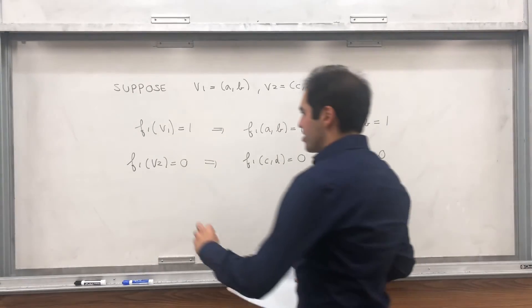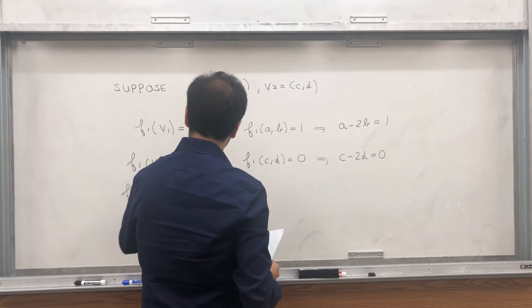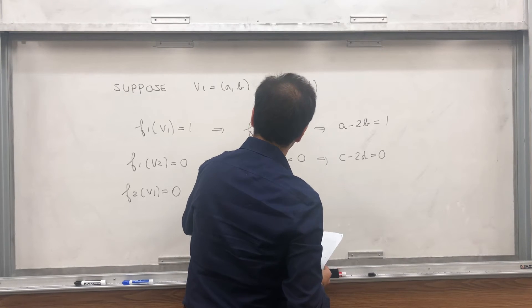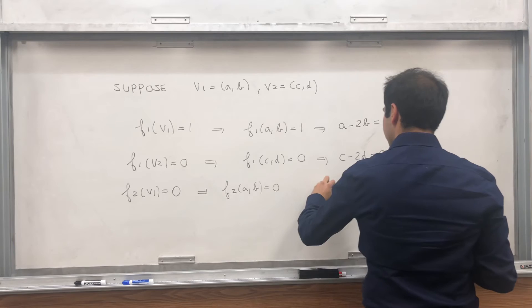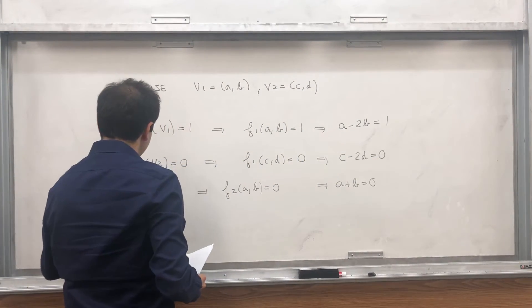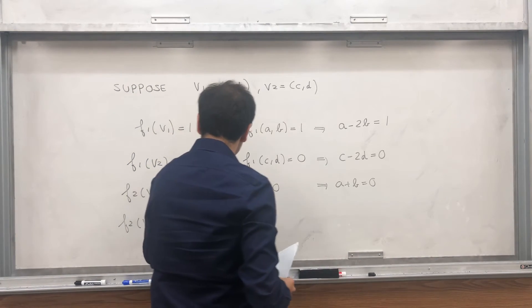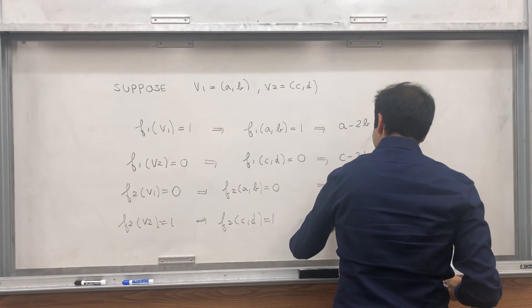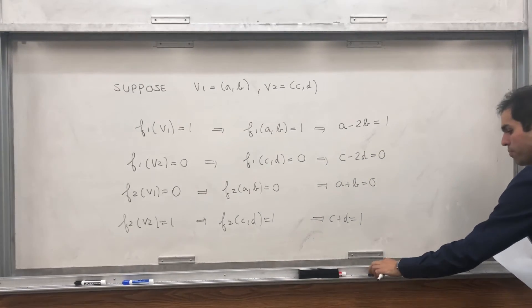And then let's continue. f2 at V1 equals 0, so f2 at V1 equals 0, but f2 is just x plus y, so a plus b equals 0. And lastly, f2 at V2 equals 1, so f2 at cd is c plus d, and that's c plus d equals 1.